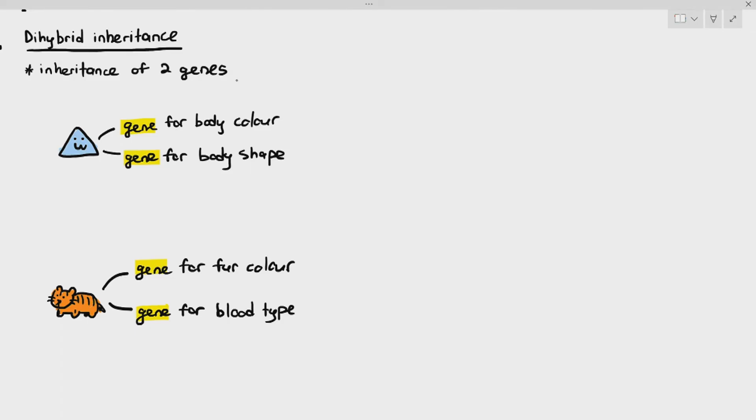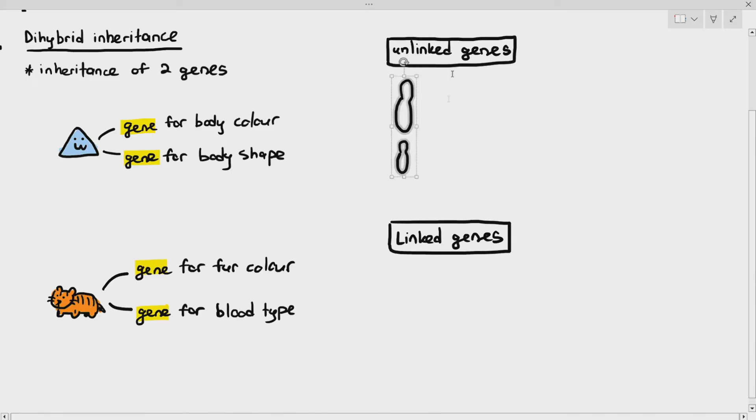When it comes to dihybrid inheritance, however, dihybrid inheritance can be split into two things: unlinked genes and linked genes. I'm going to draw out the chromosomes for the unlinked genes and the chromosomes for the linked genes, as you can see right here.